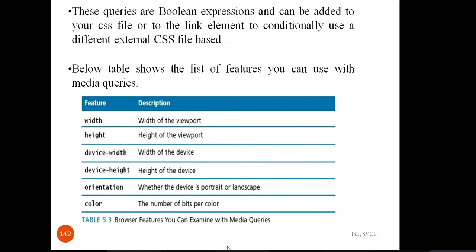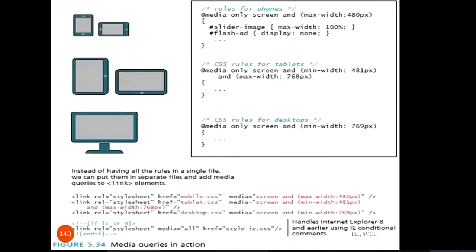Here is an example of how to add media queries to handle different screen sizes. In style.css, for phones you write: @media only screen and (max-width: 480px) — these are the styles applied when opening in a phone. You can specify styles for landscape or portrait orientation, and another set of rules for tablets.